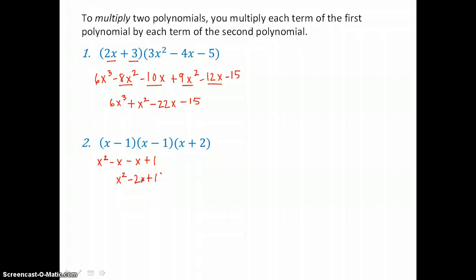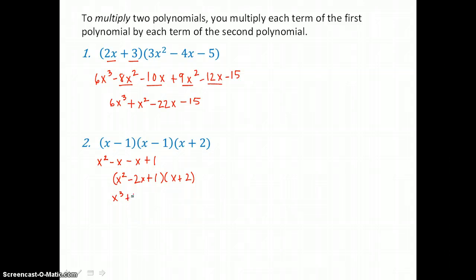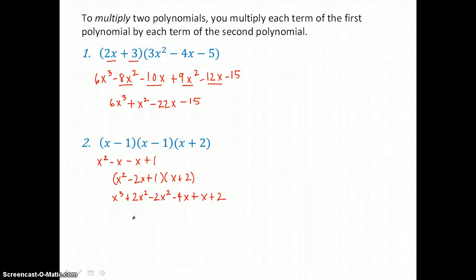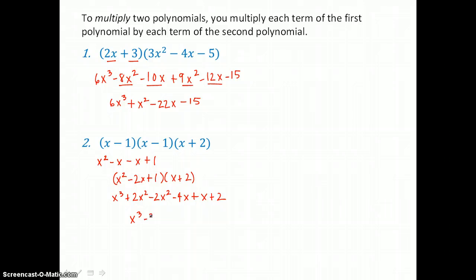And that trinomial is going to get multiplied by the third binomial, x plus 2. Distributing: x squared times x is x cubed. x squared times 2 is 2x squared. Negative 2x times x is negative 2x squared. And negative 2x times 2 is negative 4x. Then 1 times x is 1x. And 1 times 2 is 2. Adding like terms: we get x cubed. 2x squared plus negative 2x squared is 0. Negative 4x plus positive 1x is negative 3x. And positive 2 for the constant term. So this product is a cubic trinomial.